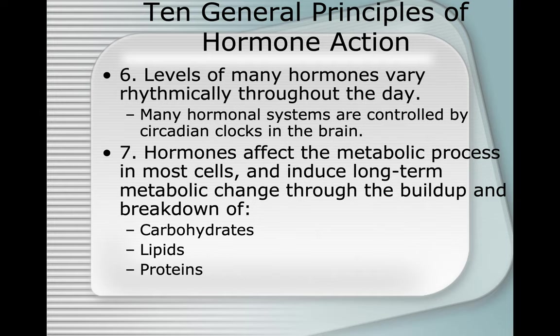Principle six: levels of many hormones vary rhythmically throughout the day. Many hormonal systems are controlled by circadian clocks in the brain. A good example is cortisol — we have a spike in the morning and a second cortisol spike at four o'clock in the afternoon. When I worked in a pediatric hospital laboratory, we had to draw cortisol from kids right at eight o'clock and again at four o'clock because that's when they had cortisol spikes.